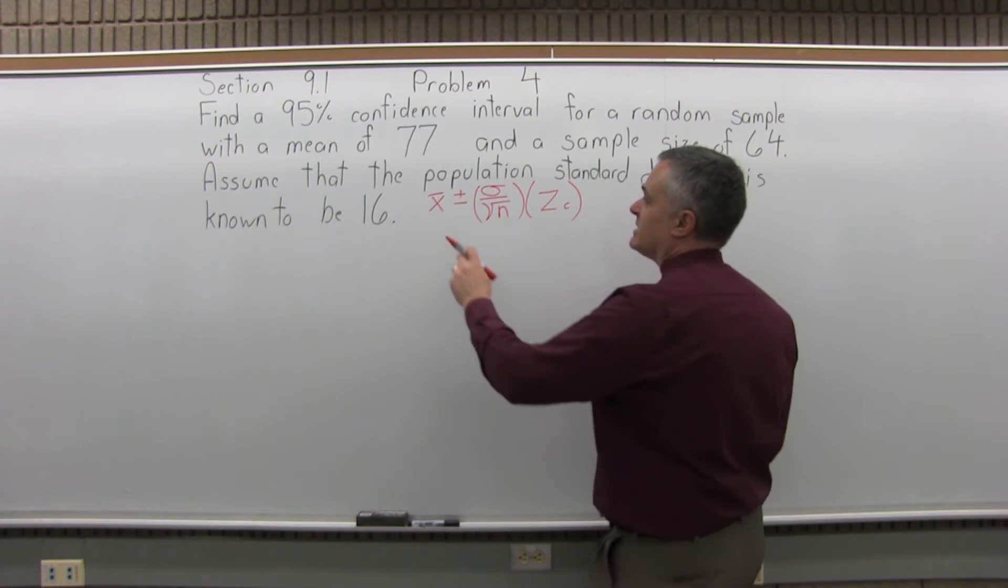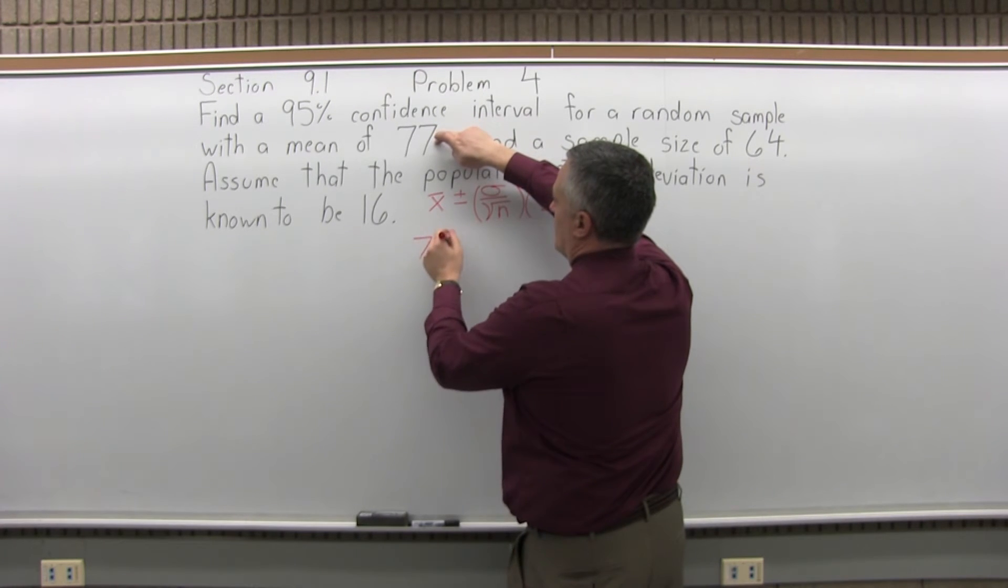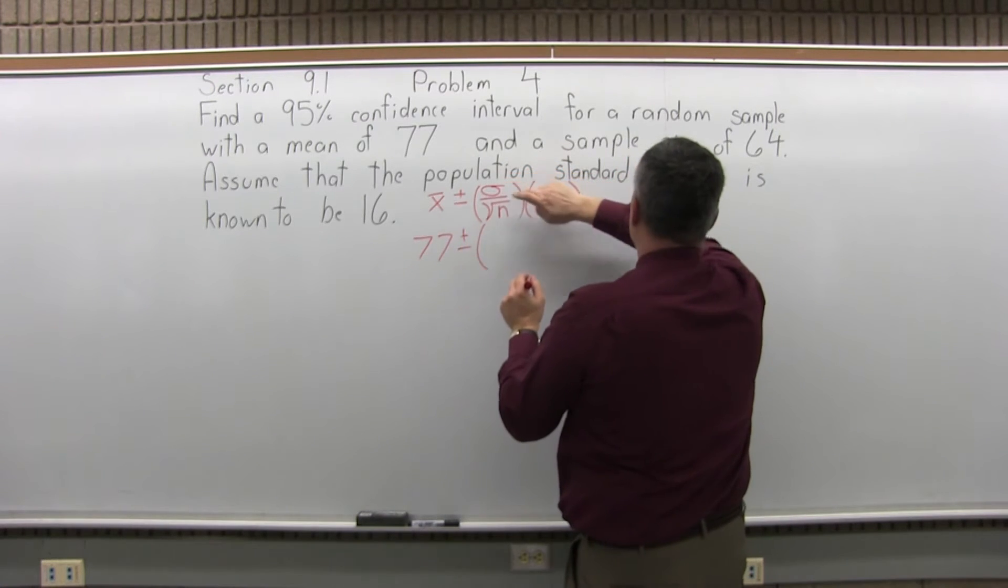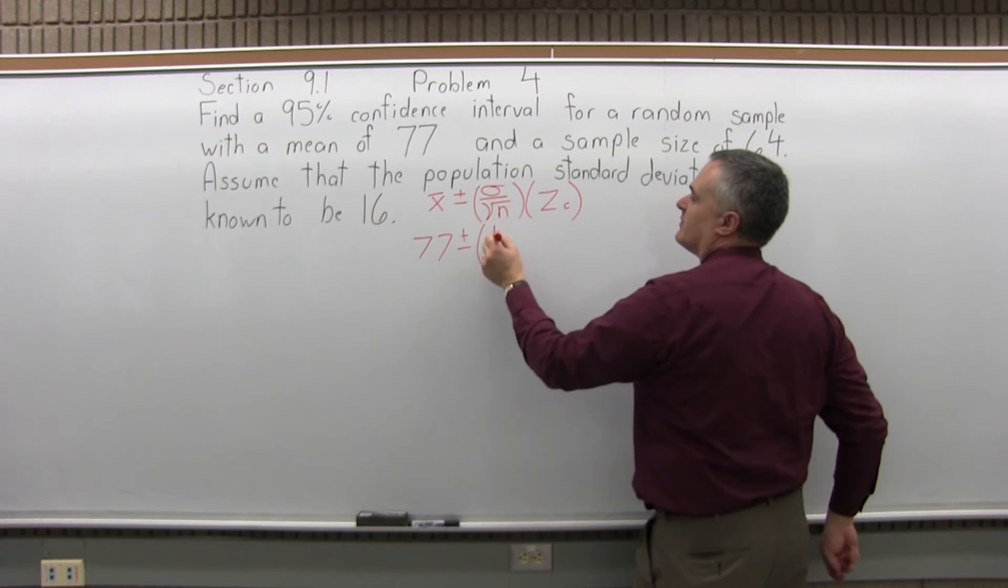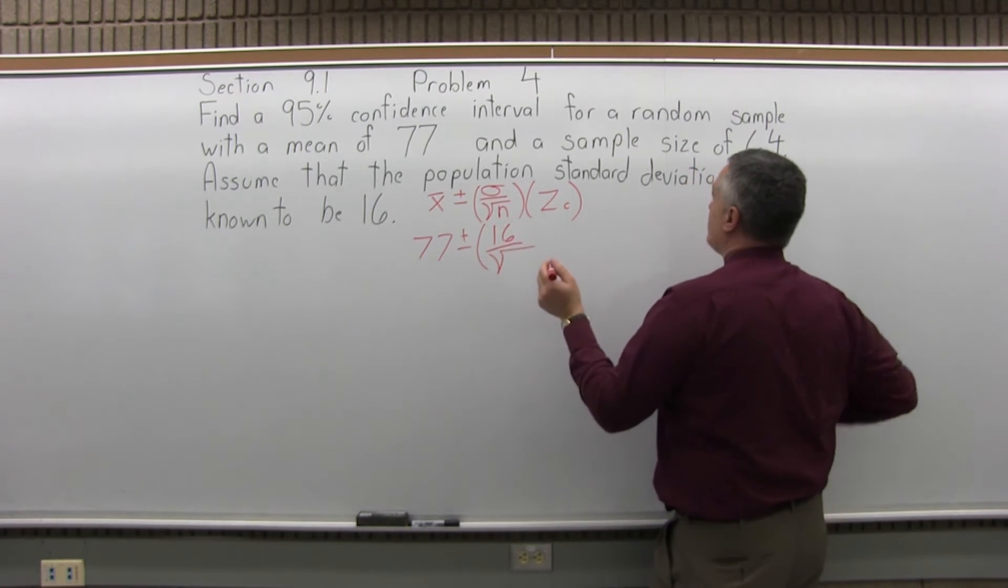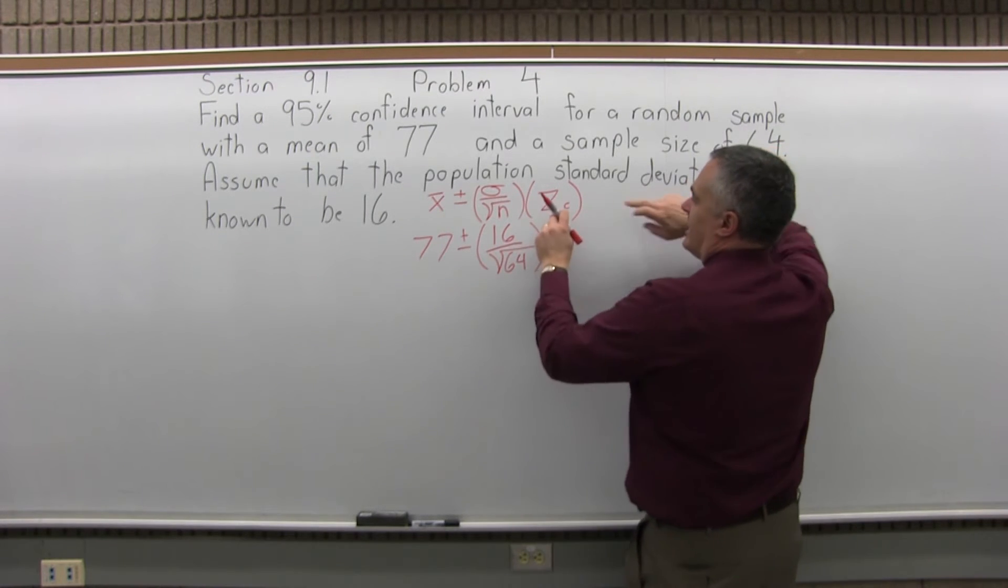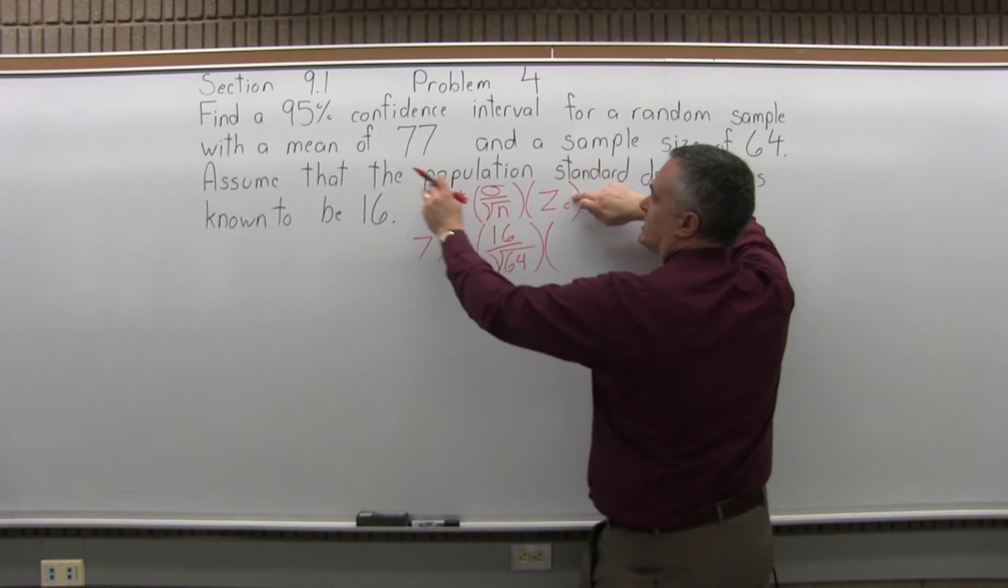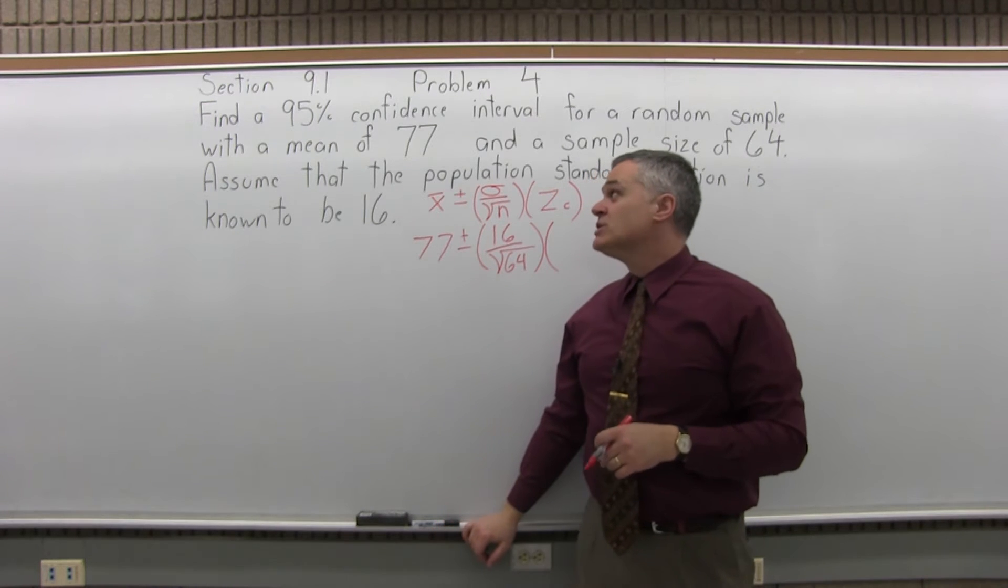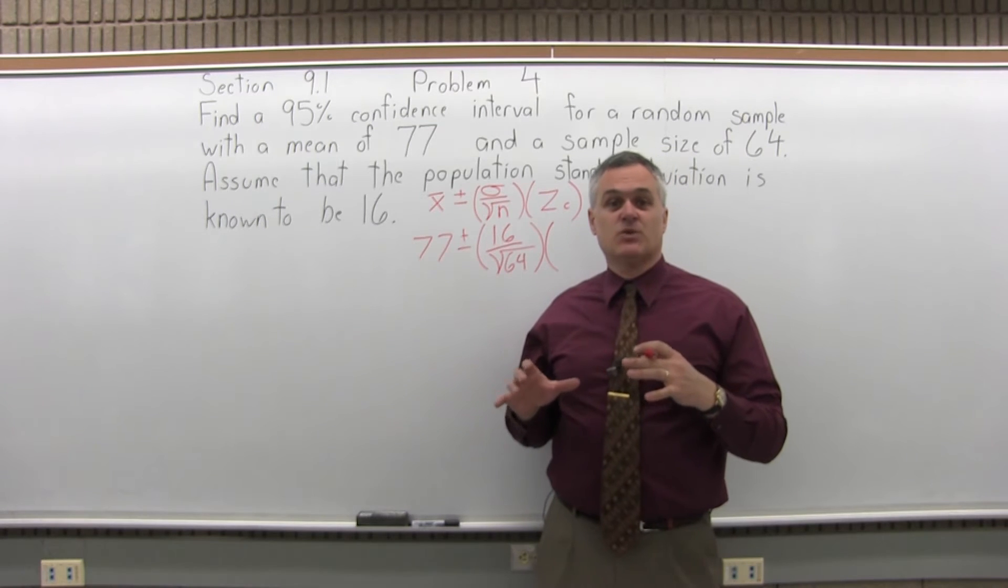So to fill this in, x-bar, the sample mean, is 77. Then plus or minus. And now sigma, the standard deviation of the population, is assumed to be 16. Divided by square root of n, n is the size of your sample, so the sample size is 64. And then times z sub c, the confidence coefficient. This problem requires a 95% level of confidence, so you can look up in a chart that for 95% the z sub c is 1.96.